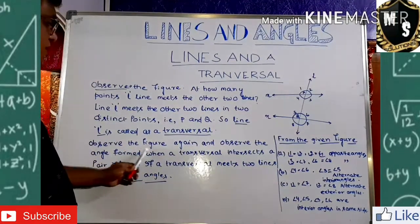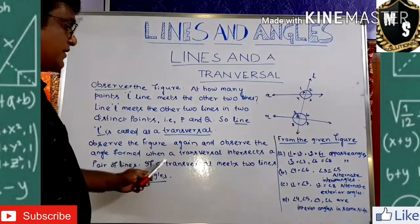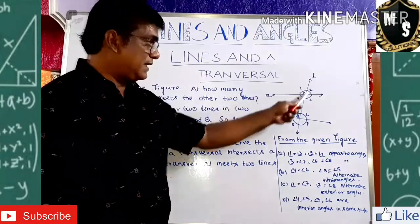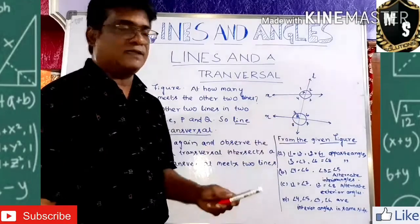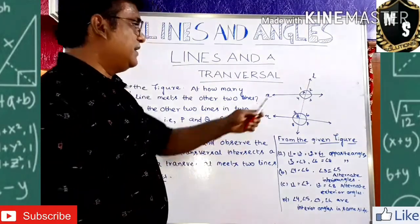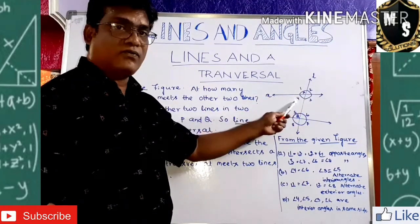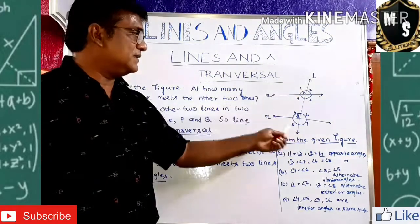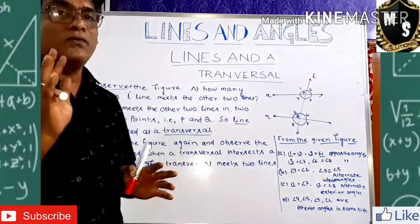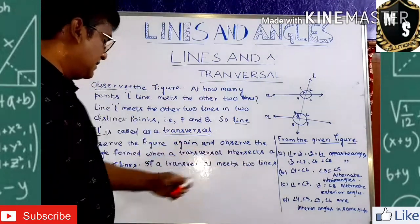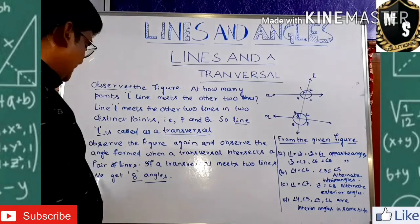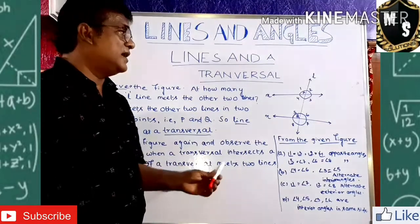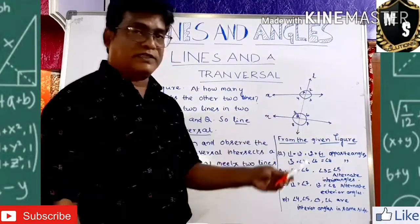Now observe the figure again and observe the angles formed when a transversal intersects a pair of lines. M and N are the pair of lines. When the transversal L intersects these two lines at two distinct points, how many angles are formed? We get angle 1, 2, 3, 4 at point P and angles 5, 6, 7, 8 at point Q — so eight angles in total are formed when a transversal intersects a pair of lines.